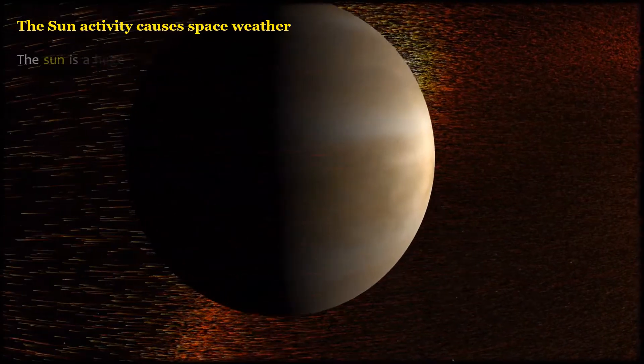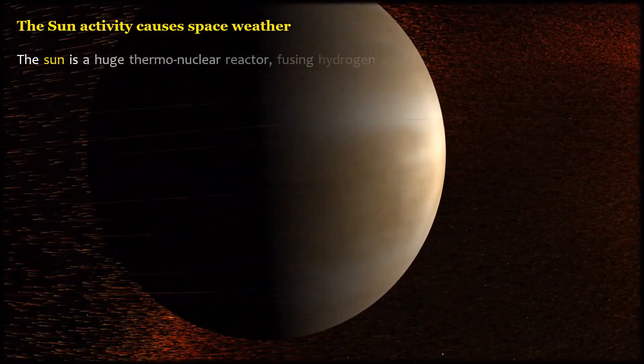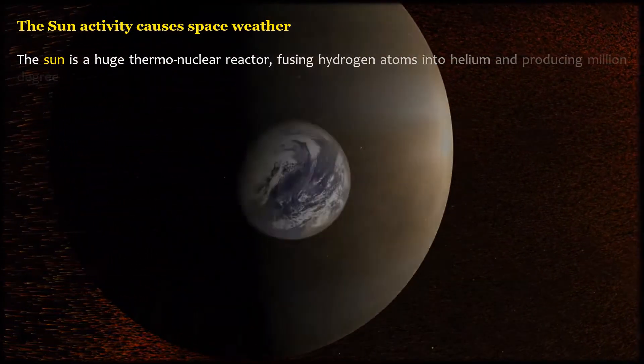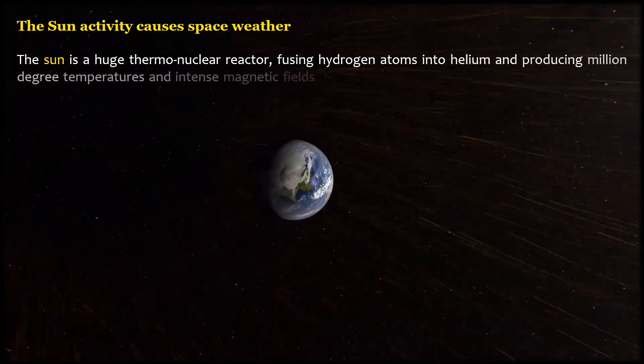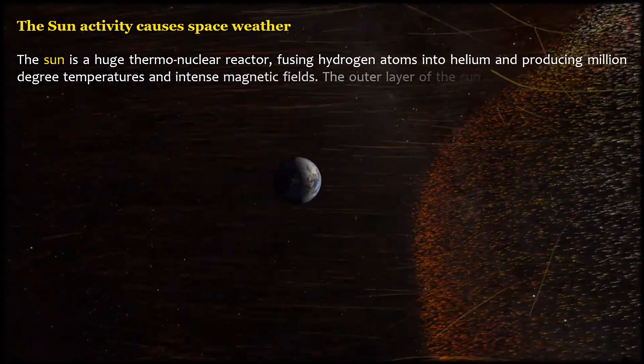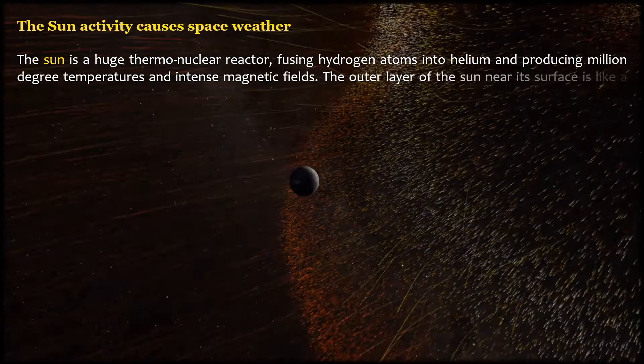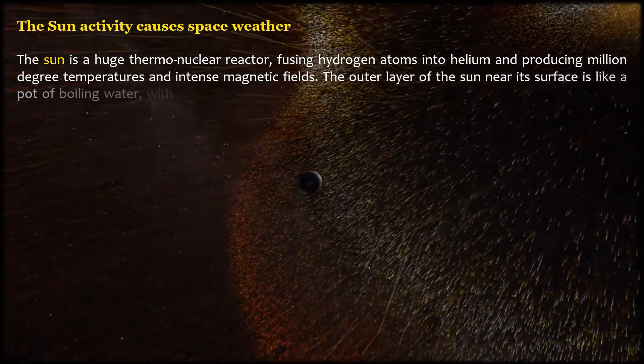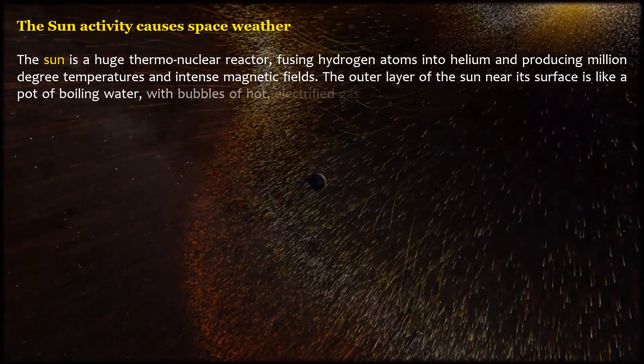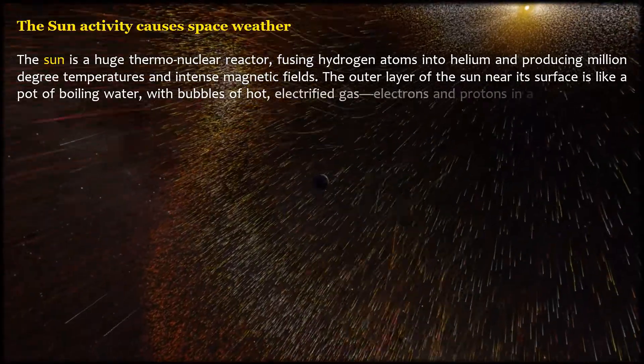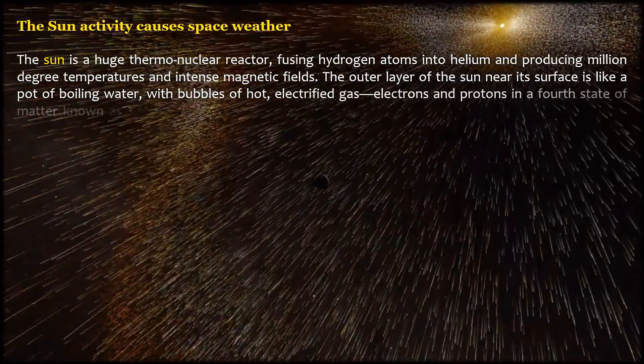The sun is a huge thermonuclear reactor, fusing hydrogen atoms into helium and producing million-degree temperatures and intense magnetic fields. The outer layer of the sun near its surface is like a pot of boiling water, with bubbles of hot, electrified gas, electrons and protons in a fourth state of matter known as plasma.